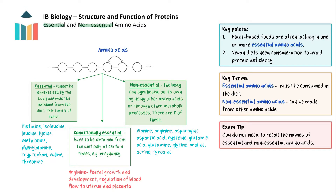In pregnancy, arginine is a conditionally essential amino acid as it plays a critical role in fetal growth and development and the regulation of blood flow to the uterus and placenta. A diet lacking in any of the essential amino acids can lead to protein deficiency. Vegan diets can provide all the essential amino acids needed. However, they do require planning, as unlike animal-based foods, many plant-based protein sources lack one or more of the essential amino acids in sufficient quantities.